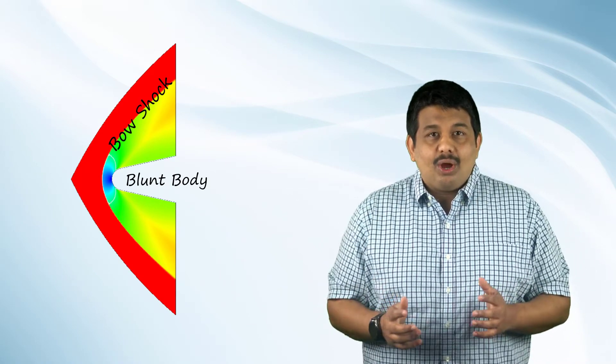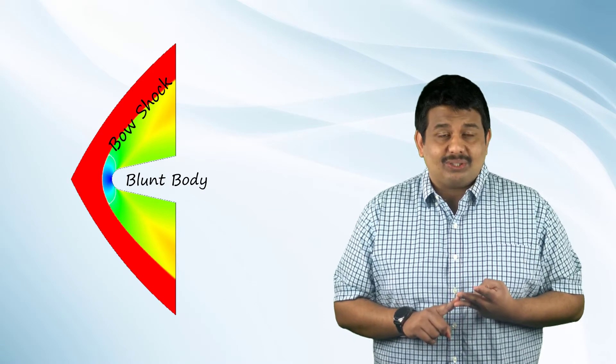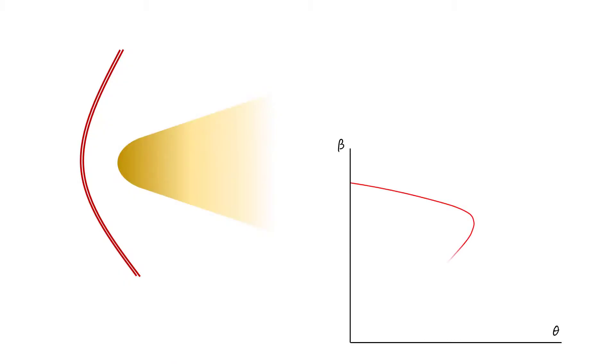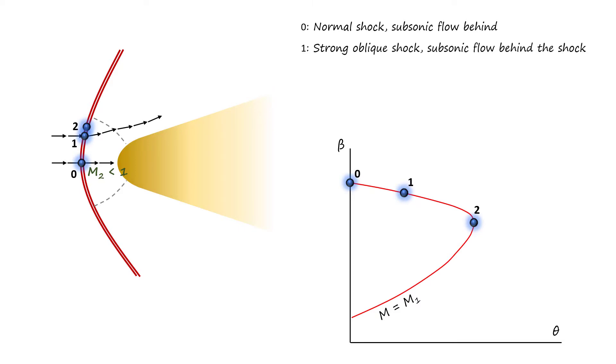This bow shock is a blend of normal, oblique and weak shocks. Let's now look at different regions of this bow shock. We will also have the theta-beta Mach number chart handy for reference. At point 0 as seen on the chart, the upstream flow is normal to the bow shock and therefore, this point corresponds to a normal shock wave. Between points 0 and 2, a strong oblique shock wave exists and the flow behind the shock is subsonic. The angle of inclination of the wave in this region can be got from the theta-beta Mach number chart from the strong wave solution section.